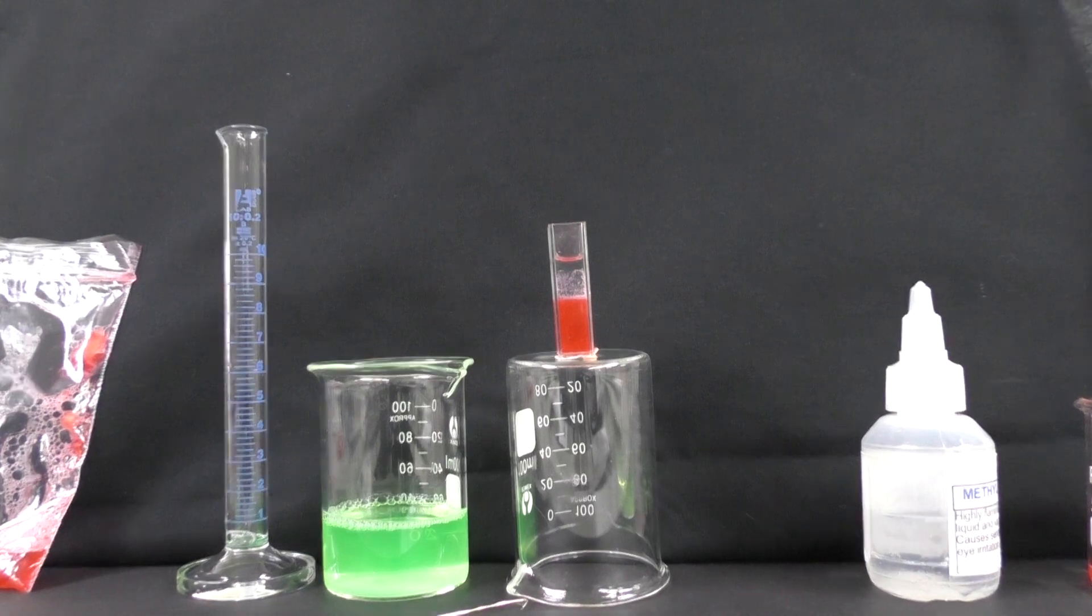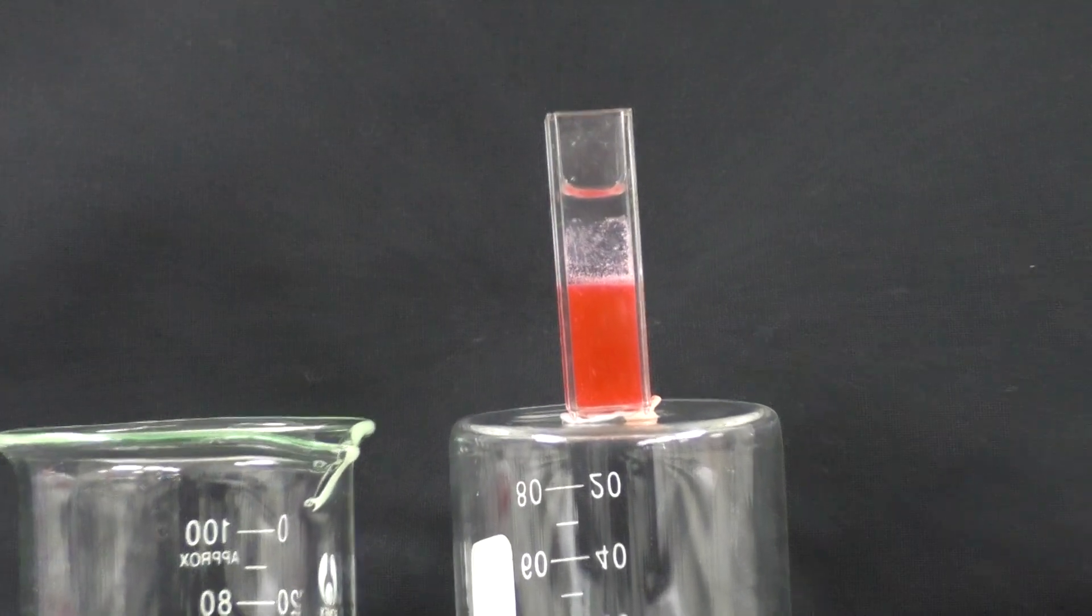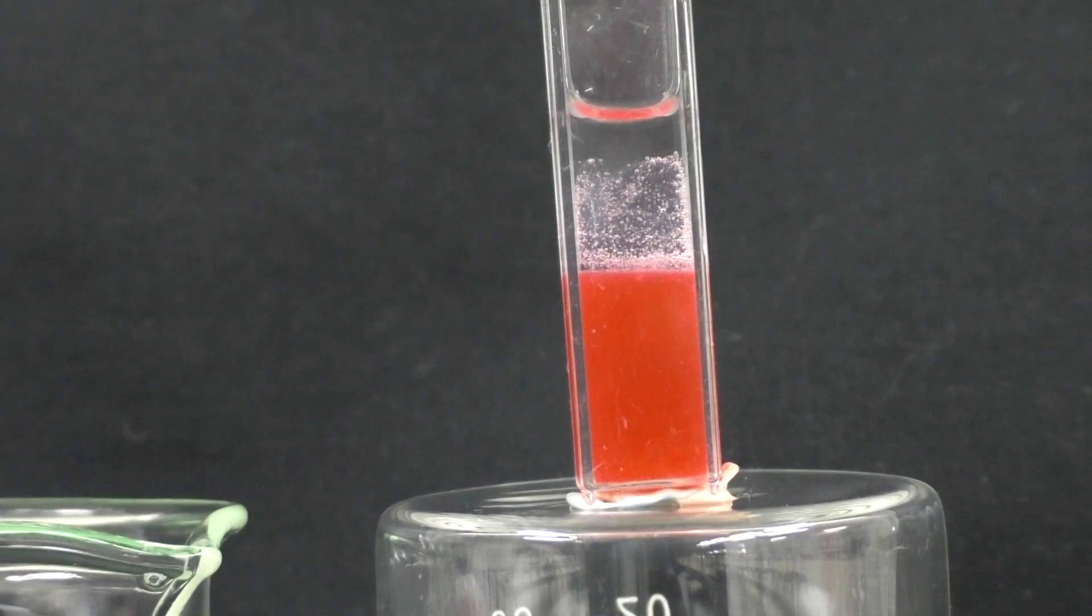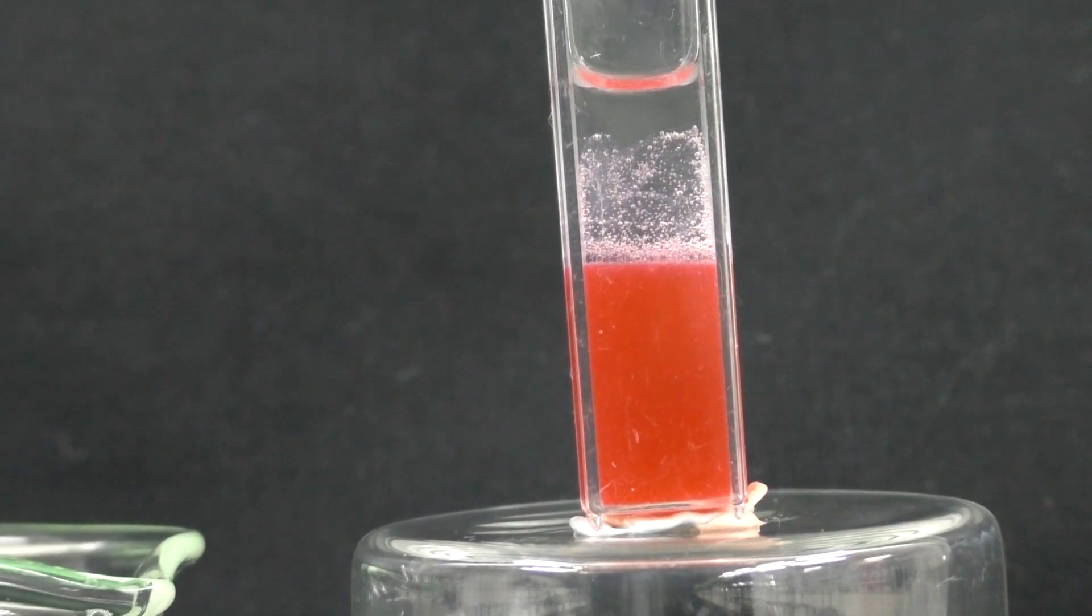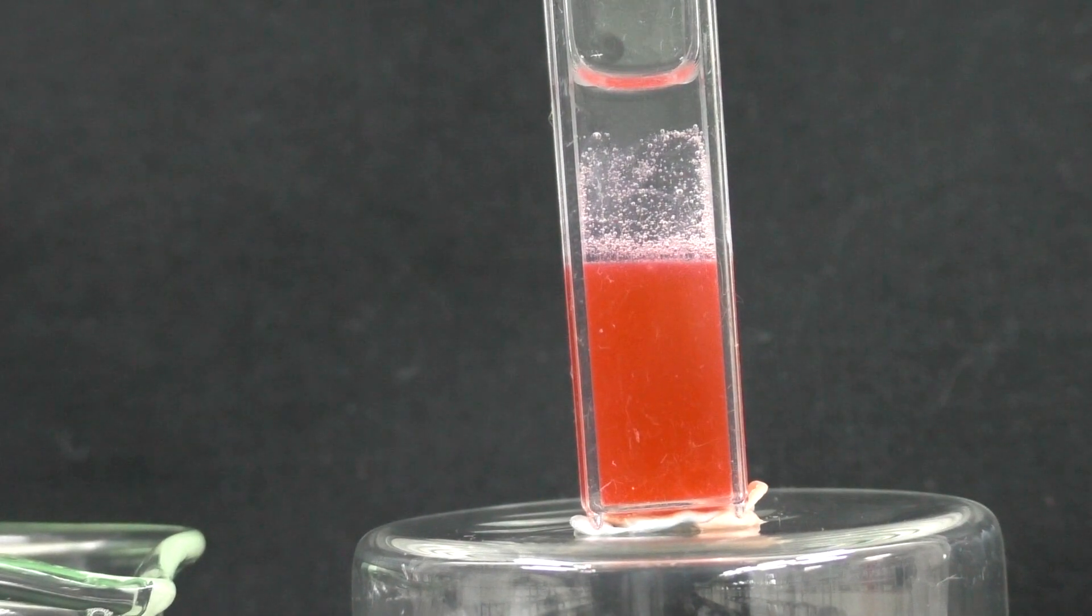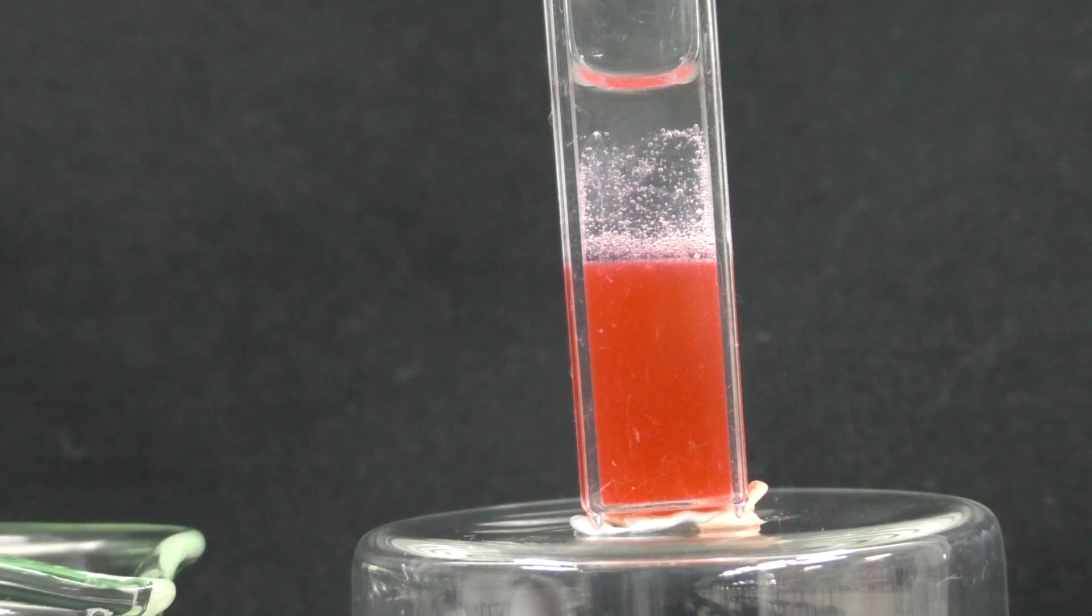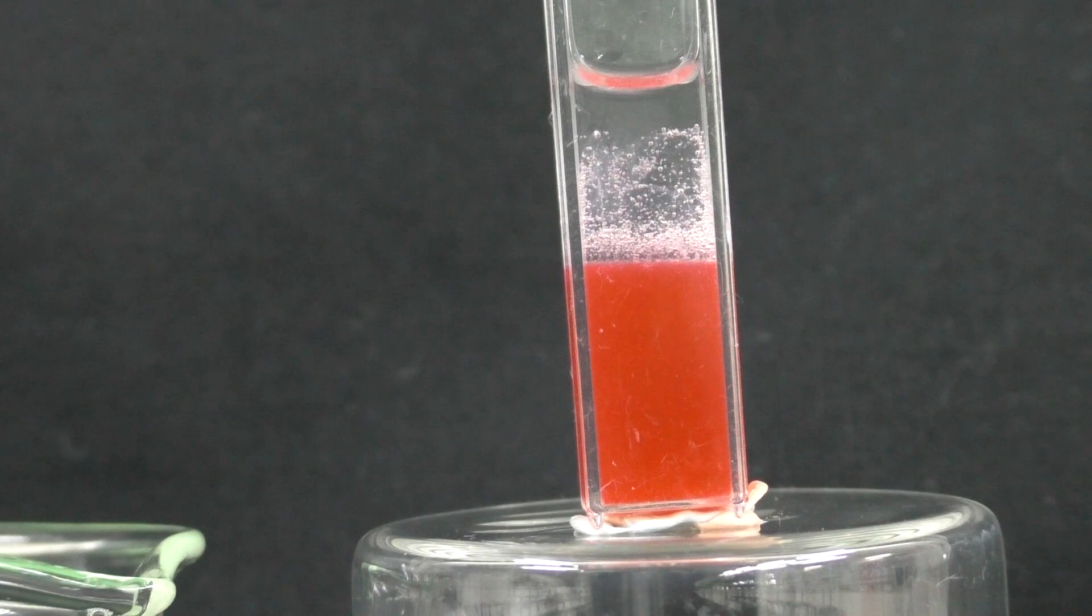So now you can see there's two layers. If we zoom that in a bit more, we can see the two layers. We've actually got the interface between the red and the clear layer. You can see there's some white stringy material. That will be our DNA.